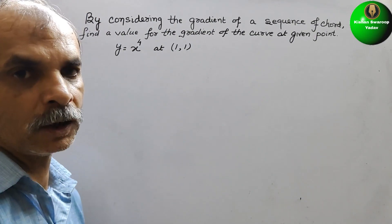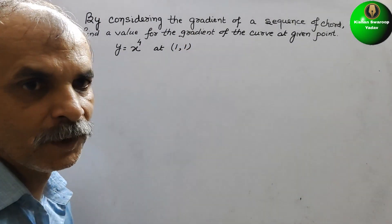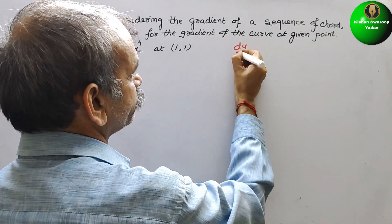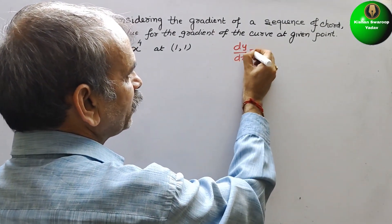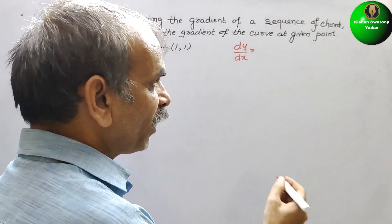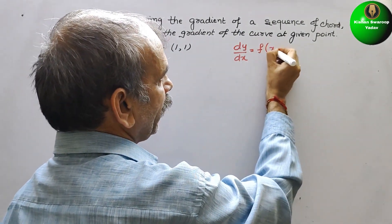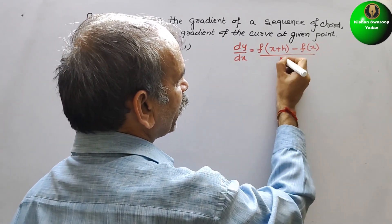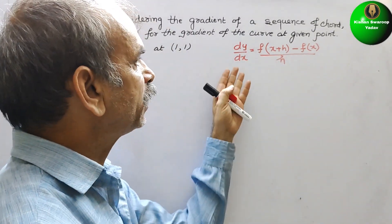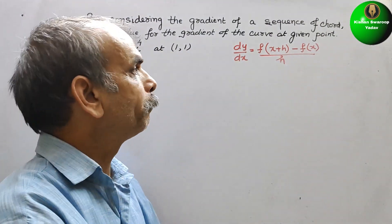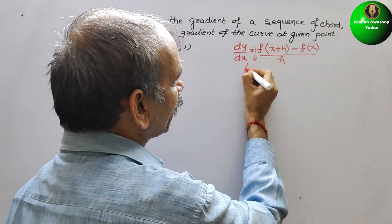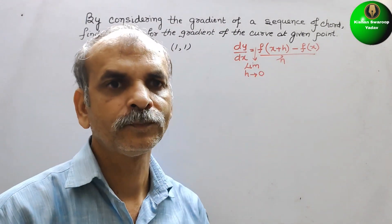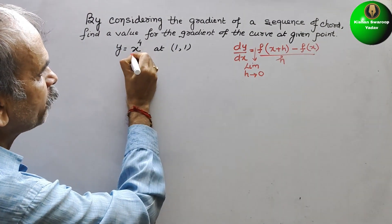So now we will find the gradient. Gradient is nothing but dy/dx. That is equal to the limit as h tends to 0 of f(x+h) minus f(x) divided by h. So this is the dy/dx. This is nothing but your f(x).